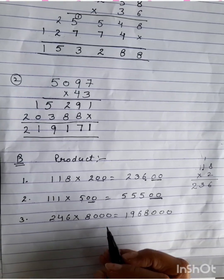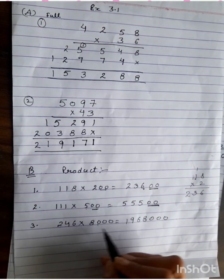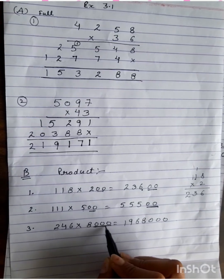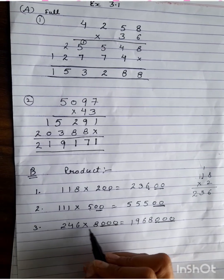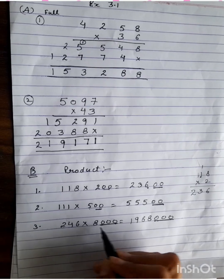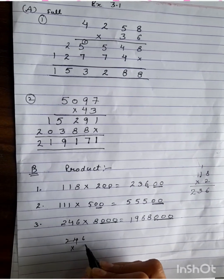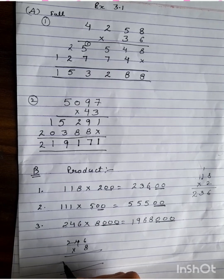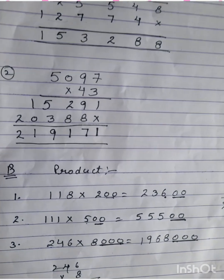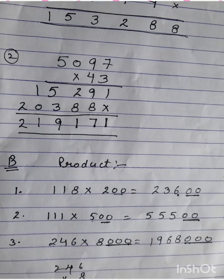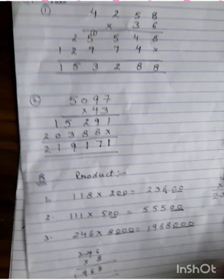I hope it's clear to all of you. Similarly, in the third question, triple zeros with multiplicand. So three zeros I have written as is. Then multiply 246 by 8. You can do this calculation on one side. And if you don't understand anything, we will discuss in the class after the vacation.